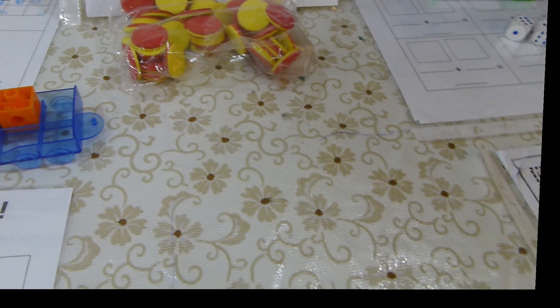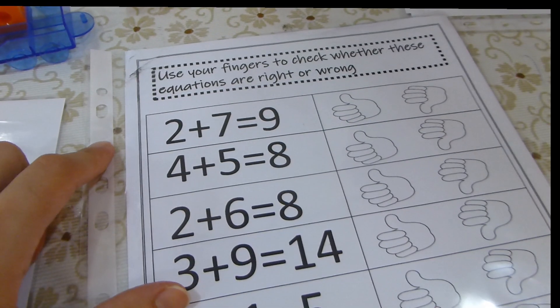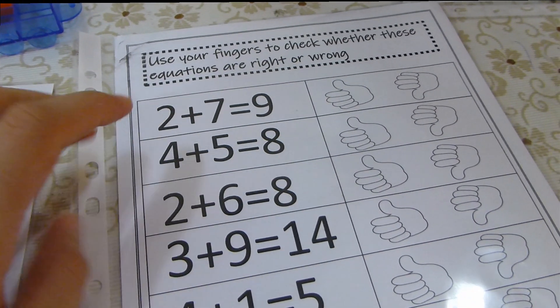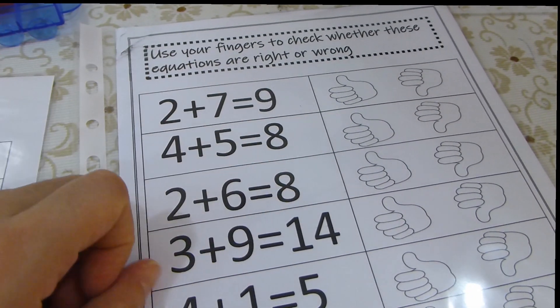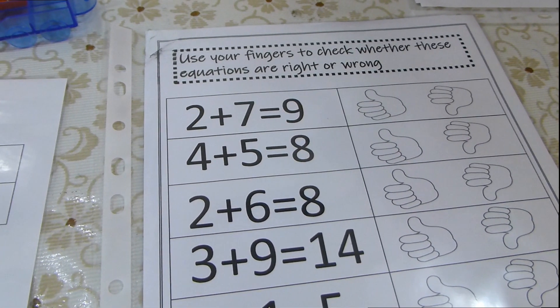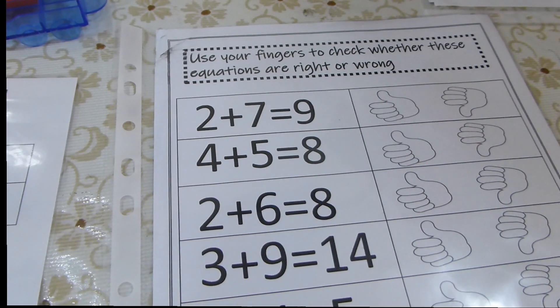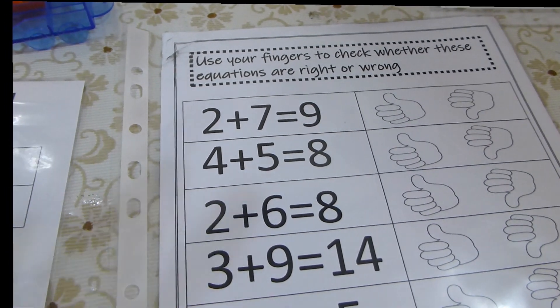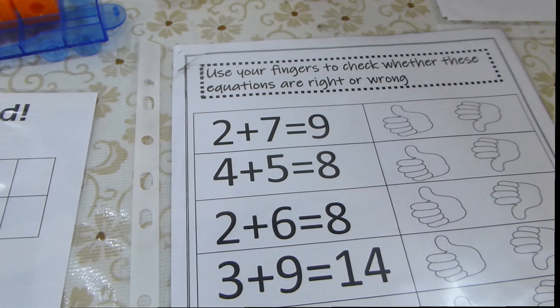Number 4 today is going to be this game, and it's called use your fingers to check whether these equations are right or wrong. This means that the child can use his fingers in both hands or he can put the big number on the head and count on with a small number on the hand.